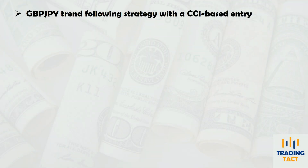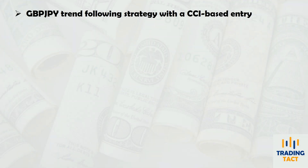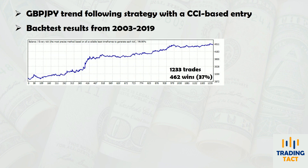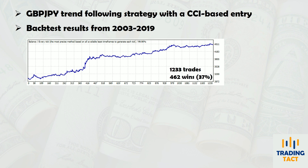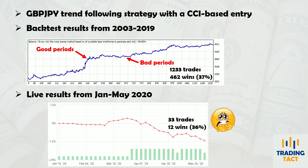To illustrate the application of these statistical tests, I'll use a pound-yen trend following strategy that was backtested from 2003 to 2019. The strategy was subsequently traded live from January to May 2020. Comparing trading results is never a straightforward task — even two identical strategies can produce very different results when traded over different periods of time. First impressions are certainly not good, but are the test results bad enough to ditch the strategy? Let's find out.